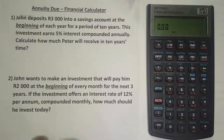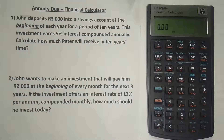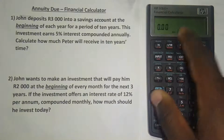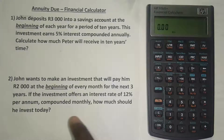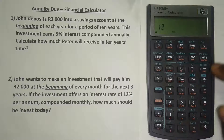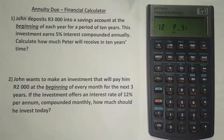This example is compounded monthly, no longer annually like the first. So we need to change the calculator from 1 payment per year back to 12. Press orange then C to verify it's still showing 1 payment per year. We want 12 payments per year because it's compounded monthly. Press 12, then the orange button, then PMT where it's written P/YR. Now it's 12 payments per year. Press orange then C to confirm: 12 per year appears. Make sure it's still in Begin mode.